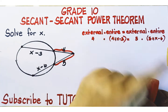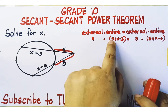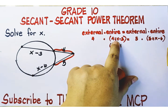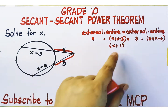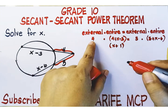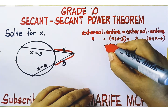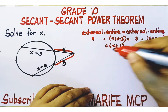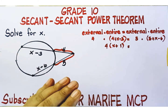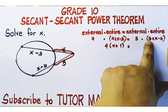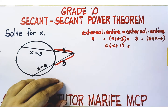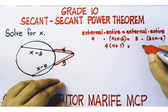Combine constant terms inside the parentheses. Four minus three is one, giving x plus one. This is the simplified form of the left expression, multiplied by the external part which is equal to four. On the right side, five minus six equals negative one, so that expression simplifies to x minus one.